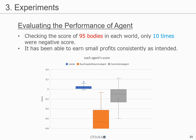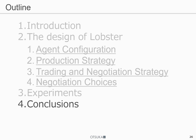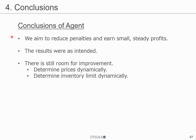We couldn't rule out negative scores completely, but we were able to get a stable score. Let me summarize the points of our presentation. I explained Robster's strategy: we aimed to reduce penalties and earn small steady profits. We implemented this idea, experimented with it, and measured its scores as intended. But there is still room for improvement. The price is currently set simply, but it could be set while considering the balance between supply and demand. It is also possible to set the inventory limits dynamically according to demand. This is all for my presentation. Thank you for listening.